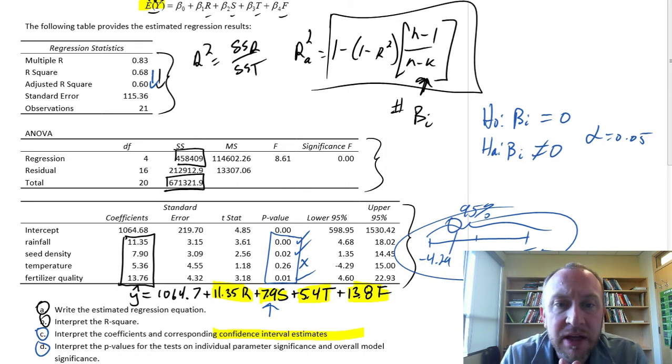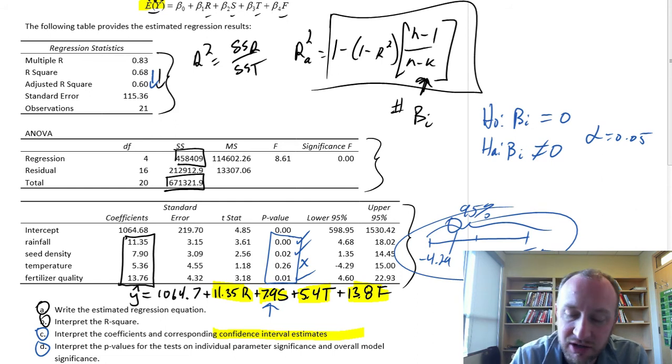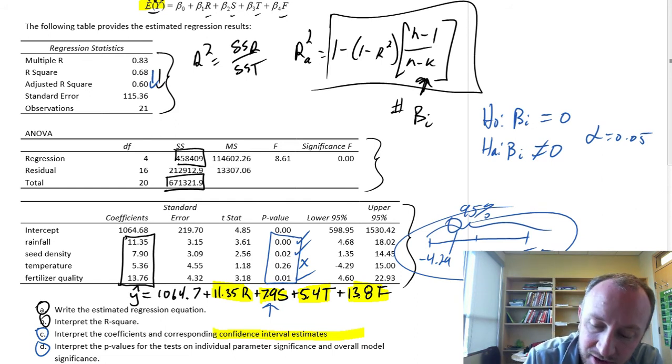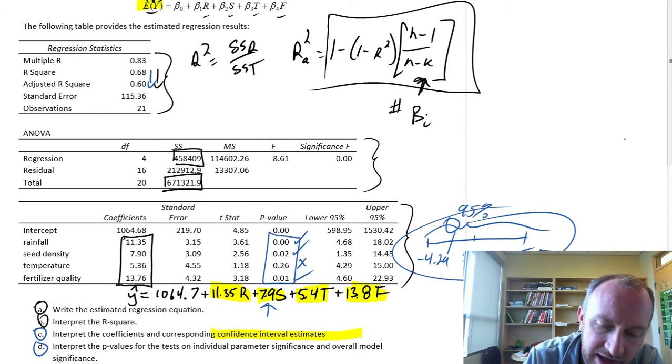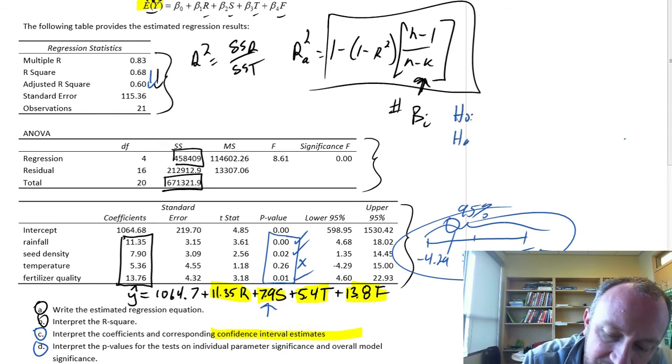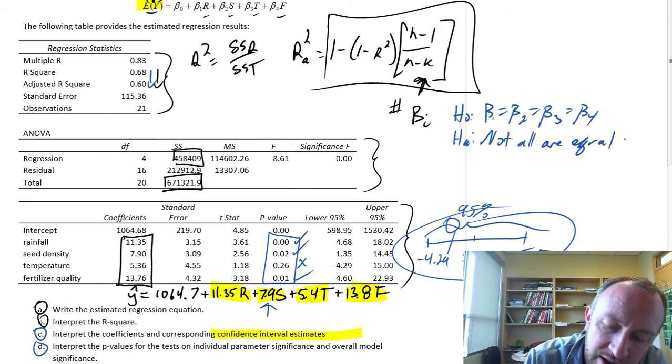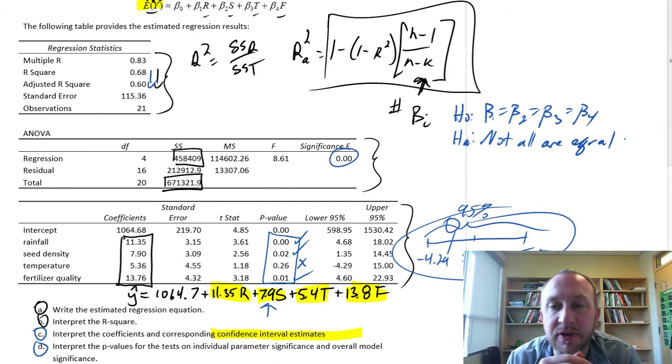We've got all of our tests for individual parameter significance. We can also look at our test for overall model significance. In this case, I have four independent variables. So the corresponding F-test would be that beta1 equals beta2 equals beta3 equals beta4. Not all are equal.